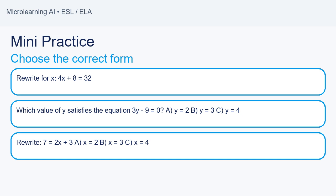Problem 2: Which value of y satisfies the equation 3y minus 9 equals 0? A) y equals 2. B) y equals 3. C) y equals 4. Answer: B.